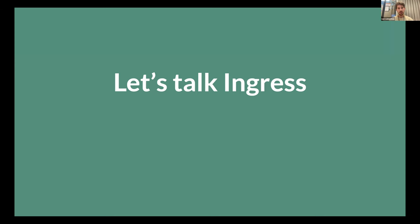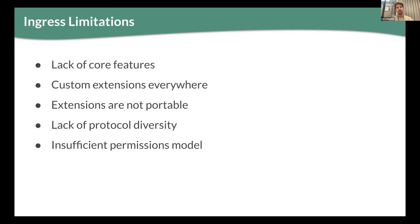But Ingress came with its own limitations, which is mainly why Gateway API was started. Ingress lacked a lot of core features, which led to custom extensions being everywhere. These extensions were usually in the form of annotations, and those annotations usually weren't portable, so you couldn't just switch from one cloud provider to another. It had lack of protocol diversity, and additionally, it had an insufficient permission model.